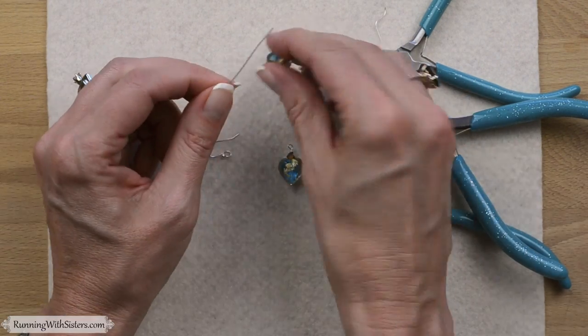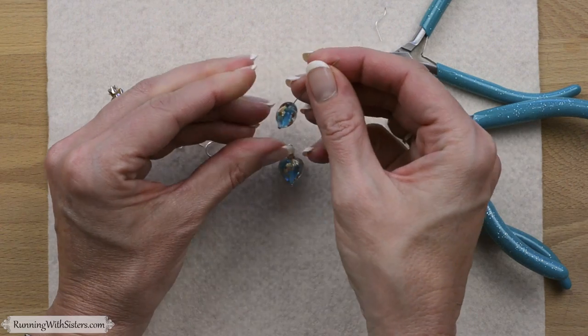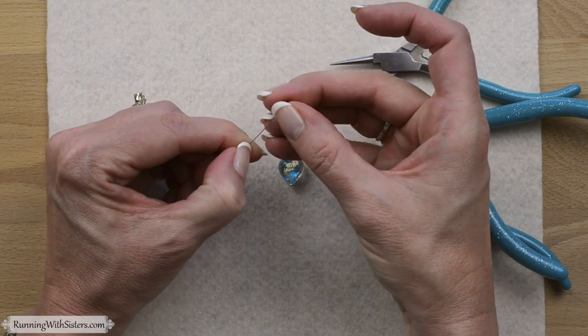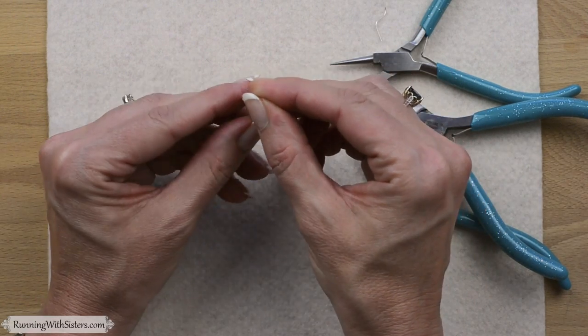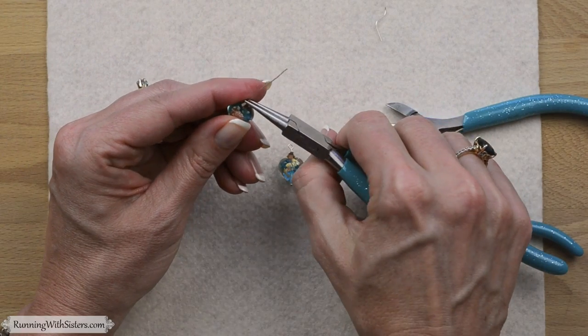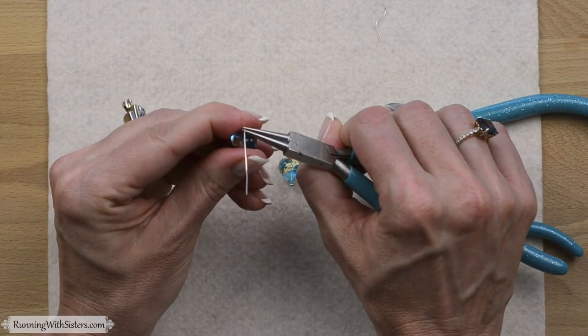We'll take our head pin and put on the Venetian glass bead. These Venetian glass beads came from a bead show. When you want a really special bead, you can go to a bead show. It's so much fun. I'm grabbing my round nose pliers. She's got her two beads on there. Now she's making another wrapped loop.